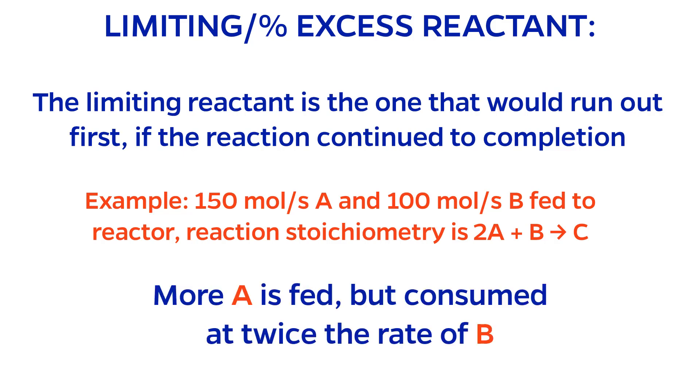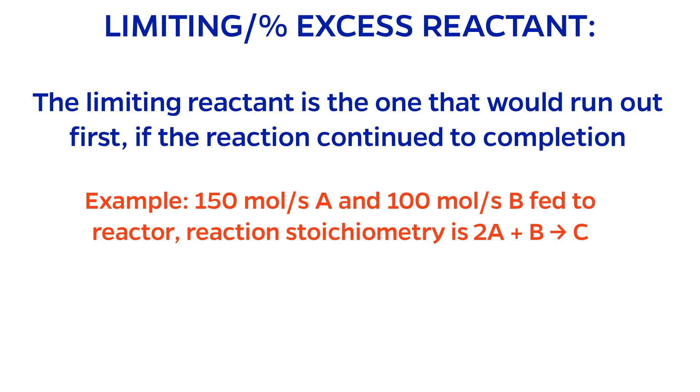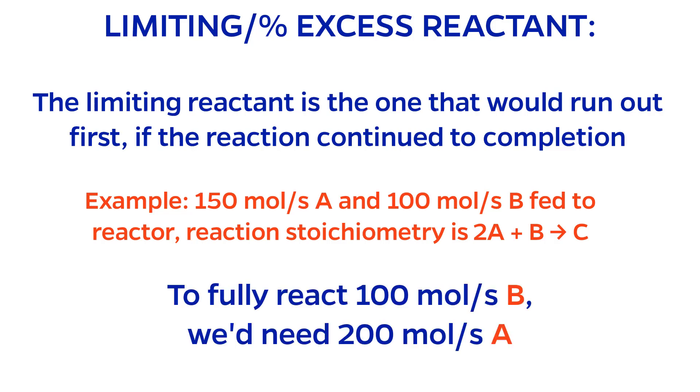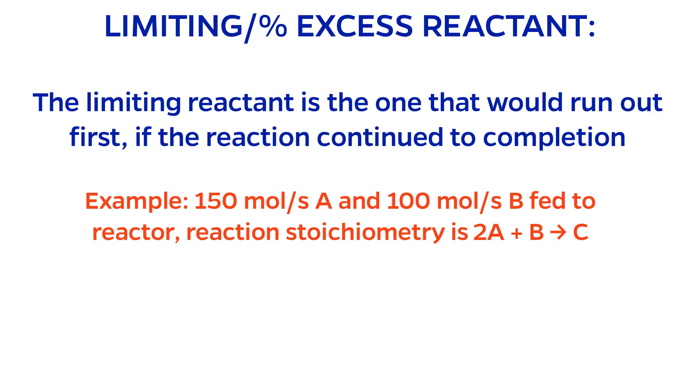Even though more A is fed than B, A is consumed at twice the rate of B. In order to fully react 100 moles per second of B, we would need 200 moles per second of A. Since we need more A than we have, reactant A is limiting in this case.